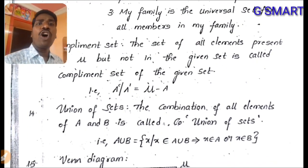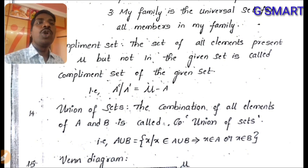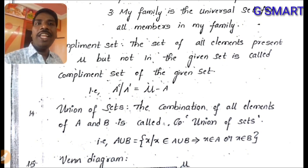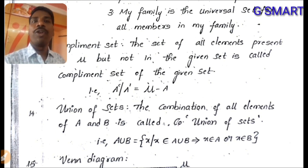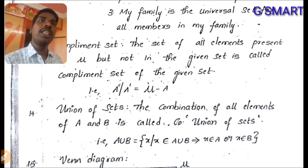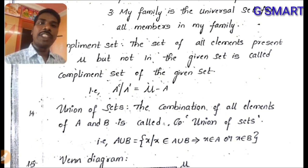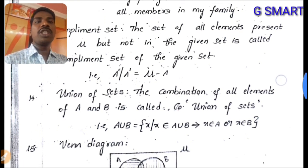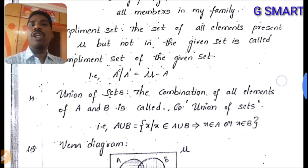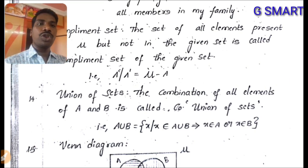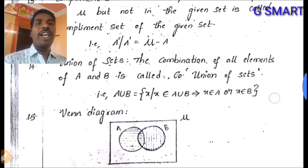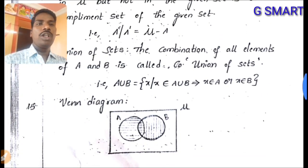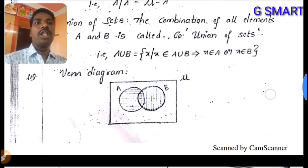Union of sets: the combination of all elements of A and B is called the union of sets. We write all elements regardless of repetition. A ∪ B = {x : x ∈ A or x ∈ B}. In the Venn diagram, the entire region of both circles is shaded.